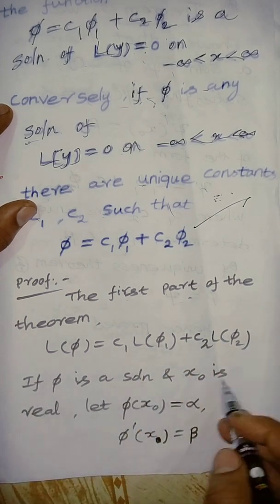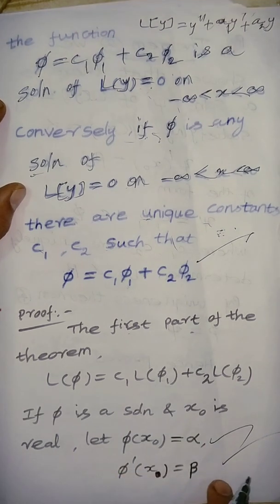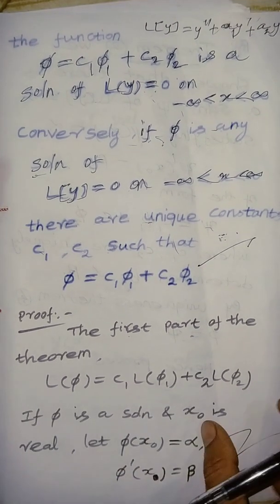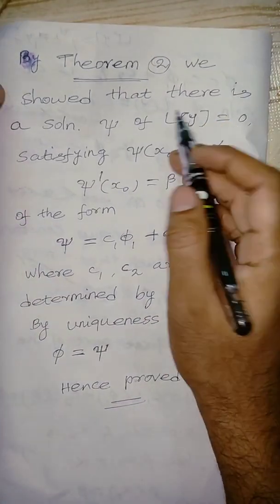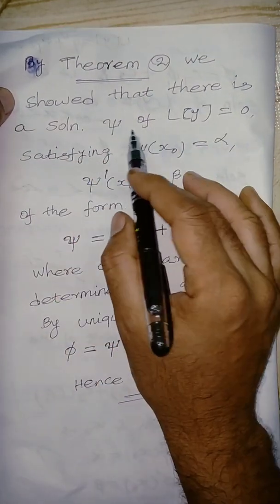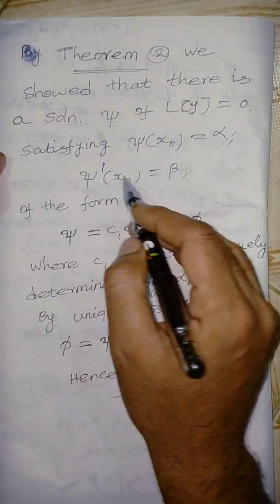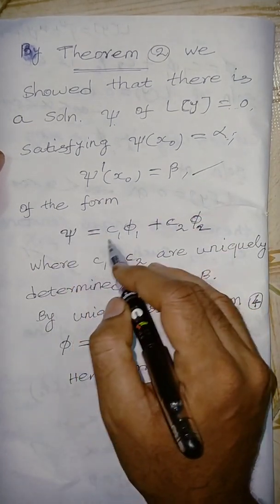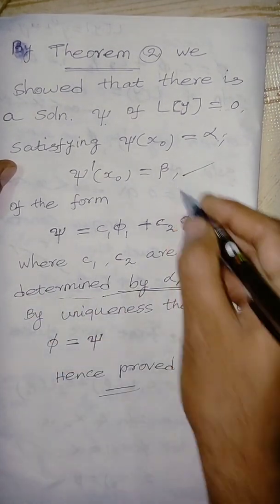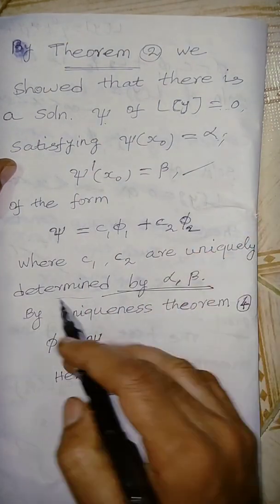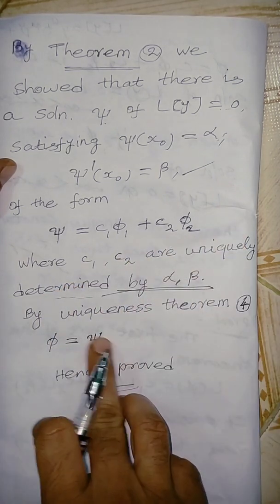If pi is a solution and x0 is a real number with pi of x0 equals alpha and pi dash of x0 equals beta — by Theorem 2 we showed there is a solution psi of L of y equals zero satisfying psi of x0 equals alpha and psi dash of x0 equals beta, on the form psi equals c1 pi1 plus c2 pi2 where c1 and c2 are uniquely determined by alpha and beta. By the uniqueness theorem, pi equals psi — unique solution.